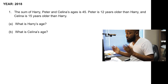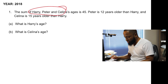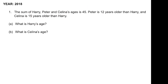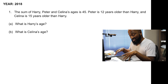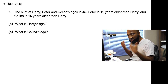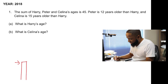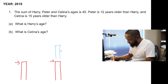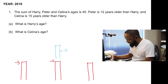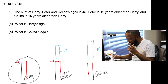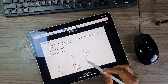In this question, the sum of three students' ages is 45. Peter is older than Harry by 12 years, and Selina is also older than Harry by 15 years. The question is asking us to figure out Harry's age and Selina's age. This is a classic style of unequal sharing. Harry has some age, Peter has Harry's age plus an additional 12 years, and Selina has Harry's age plus an additional 15 years.